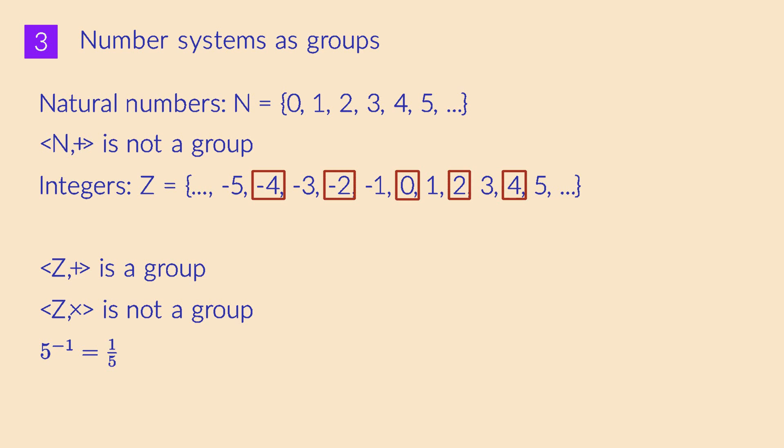An interesting subset of the integers are the multiples of some given number n. Here are the multiples of 2. Notice that they are closed under addition. The sum of 2 even numbers is again even. It would be a good exercise for you to verify that this subset of the integers, with the addition operation, satisfies all the rules of a group. This is true for the multiples of any integer n, including 0. The multiples of 0 are just the number 0 itself, which is indeed a very trivial group under addition.